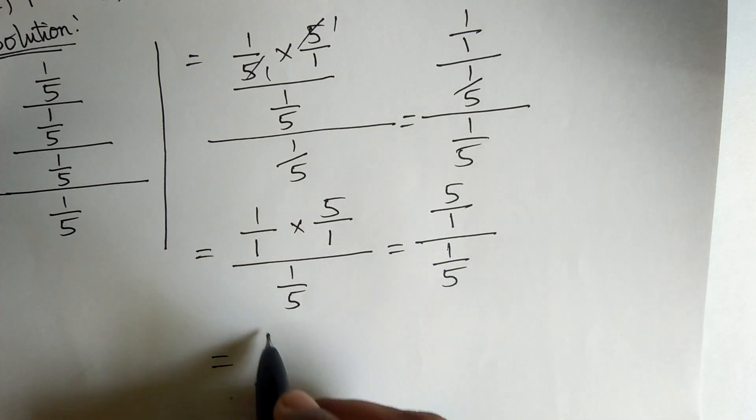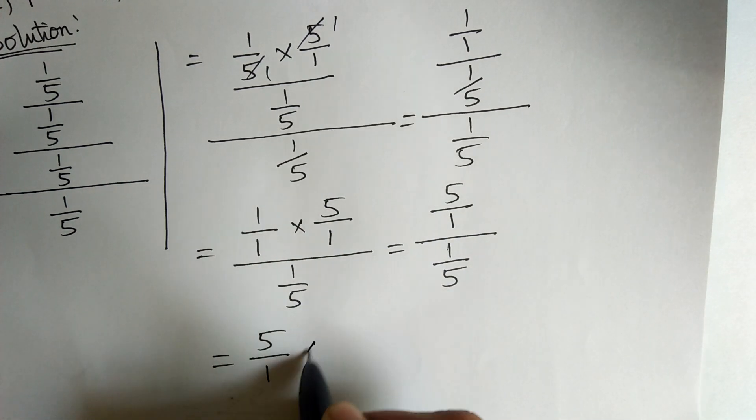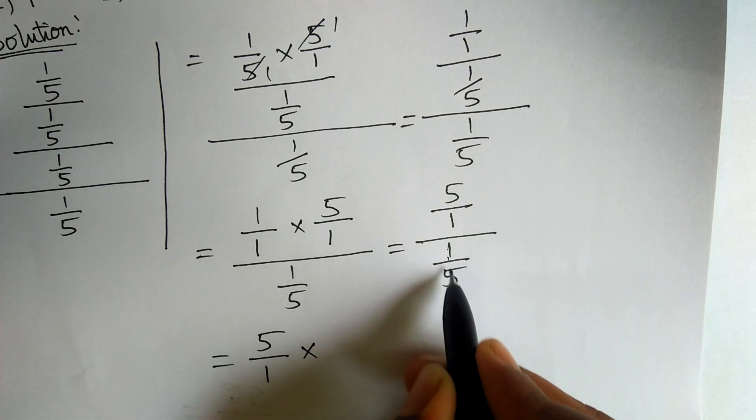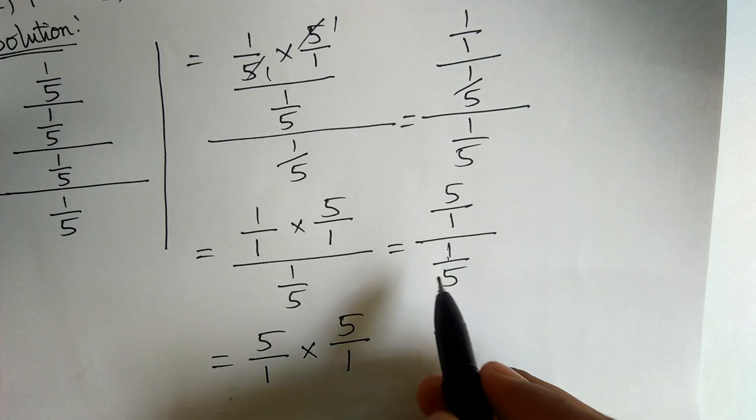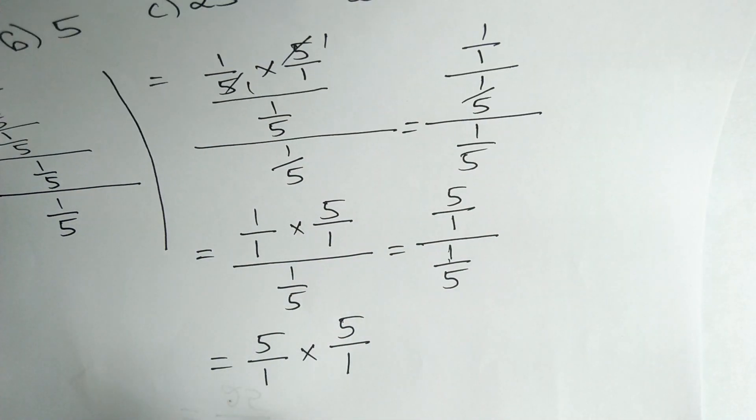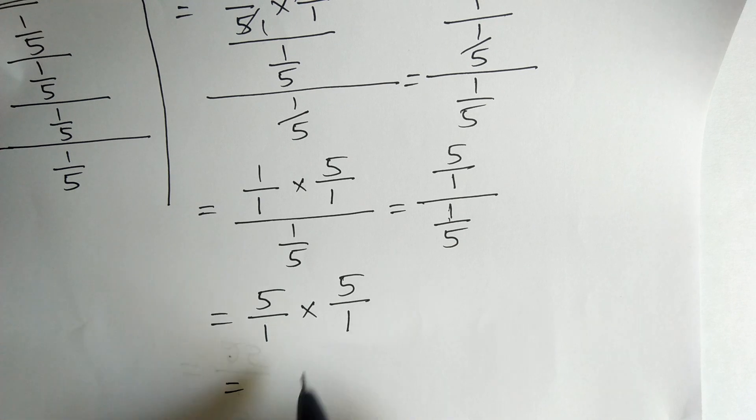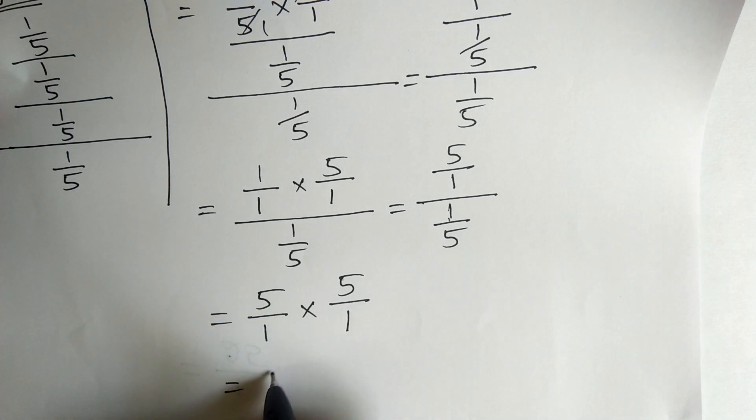This can be written as 5 by 1 into 1 by 5 is written as 5 by 1. Therefore, the answer is 5 by 5 or 25.